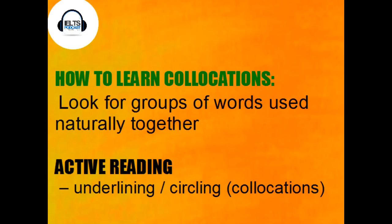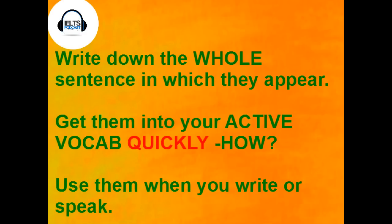The idea is that we get the vocabulary from the passive — your passive vocabulary, which is your ability to recognize it — into your active vocabulary, which is when you're using it in your everyday language. When you're studying, with the active reading, what's good is if you see the word and then you write down the whole sentence in which it appears. And then try to use it again during the day. It's going to be a bit harder to squeeze in 'noise pollution' or 'income inequality', but if you're practicing your writing it could be a little bit easier.